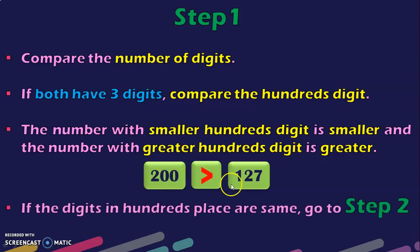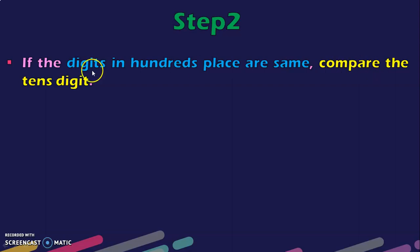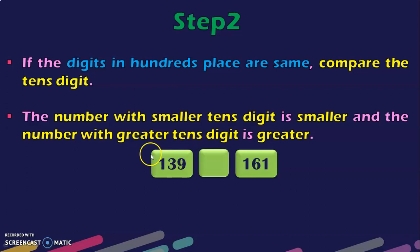Suppose in the 100s place you have the same number — then you go to step 2. If the digits in the 100s place are the same, compare the 10s digit. The number with the smaller 10s digit is smaller and the number with the greater 10s digit is greater. For example, 139 and 161: first look at the 100s place — both have 1. So next look at the 10s place, where we have 3 and 6. Since 3 is lesser than 6, 139 is lesser than 161.